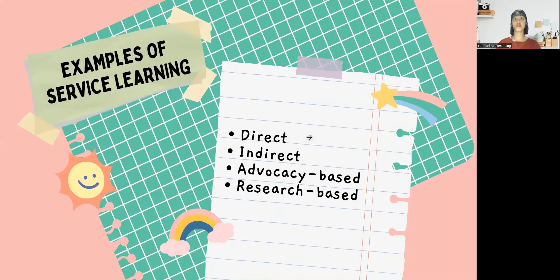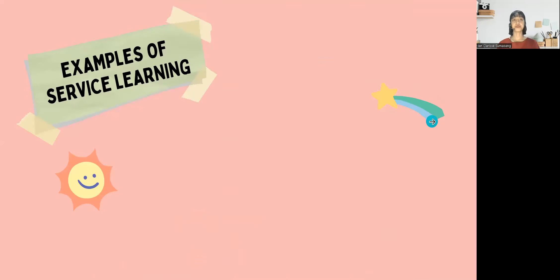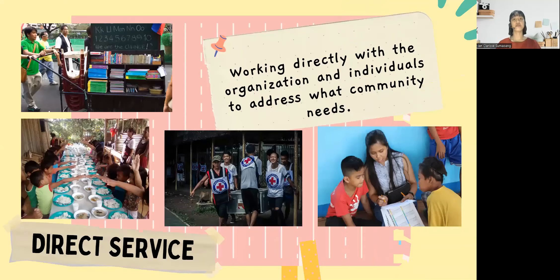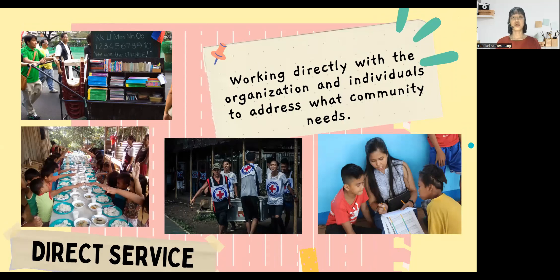Now let's proceed to the examples of service learning. We have four: direct, indirect, advocacy-based, and research-based. Direct service is working directly with the organization and individuals to address community needs — it is service at an interpersonal level where there is actual interaction with people in the chosen community. Some examples are providing food to the homeless, organizing mobile classrooms for street children, animal shelter feeding programs, tutoring, and volunteering for disaster services. Psychology and education-related courses incorporate these kinds of services in their curriculum.